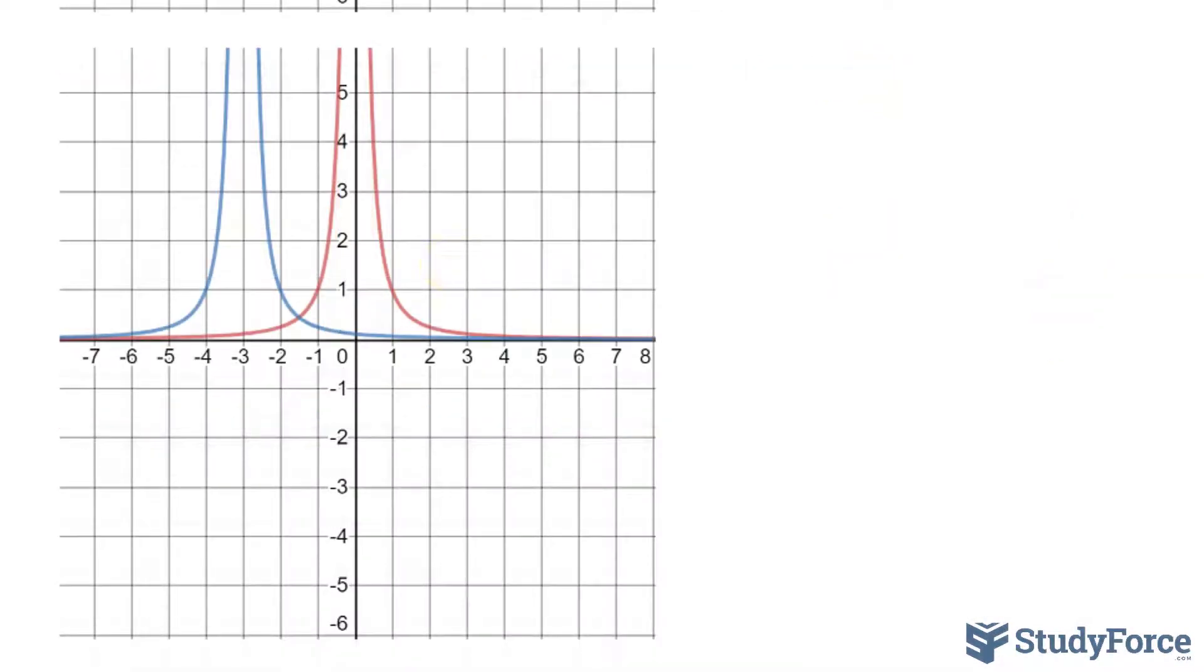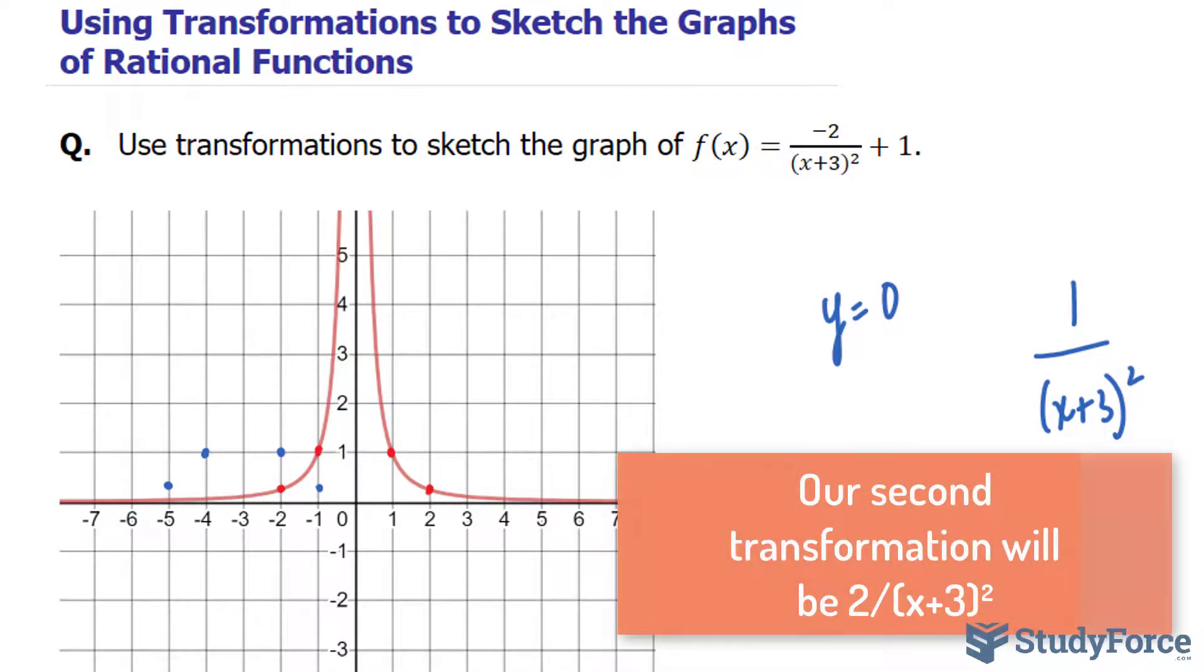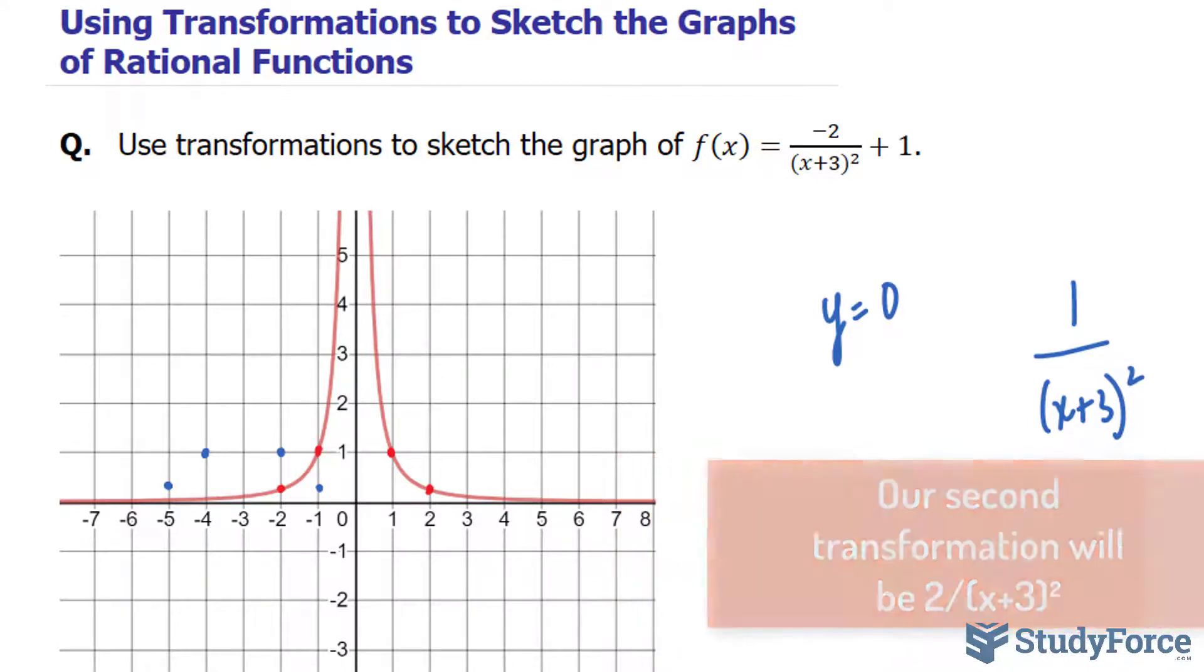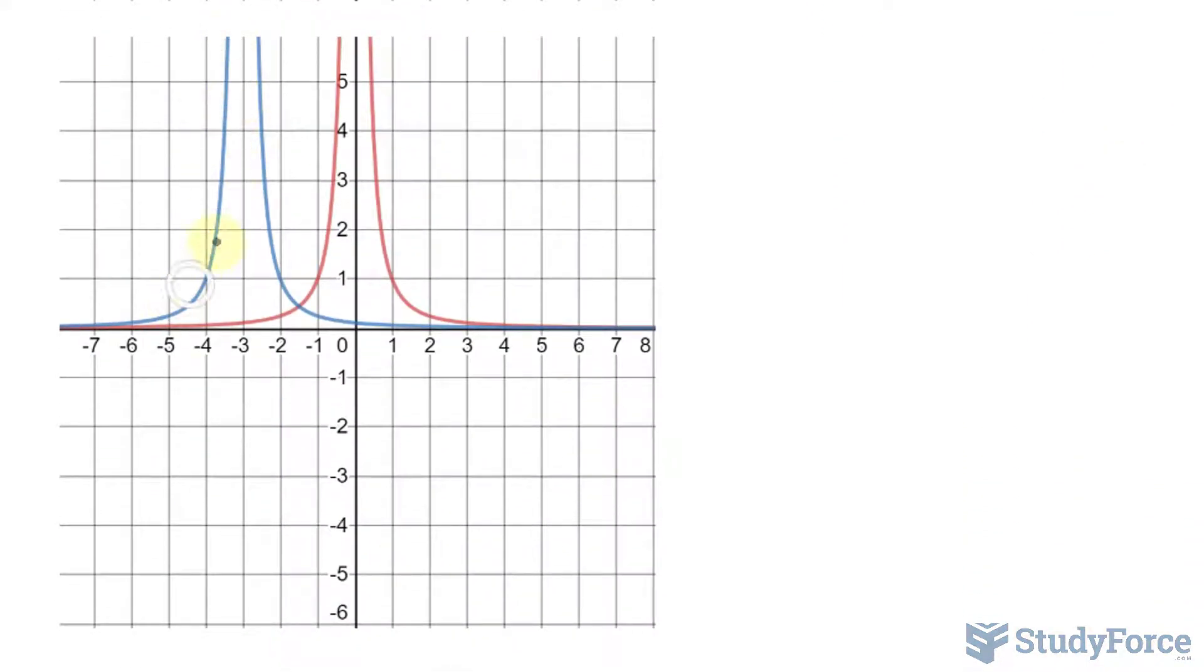Now, in our next transformation, look at the function again. What I will do is vertically stretch the graph by a factor of 2 to obtain the graph y equals 2 over (x + 3) raised to the power of 2. A vertical stretch here means that the y outputs will occur, in this case, 2 times faster. So expect the graph to look a little wider than the blue one.